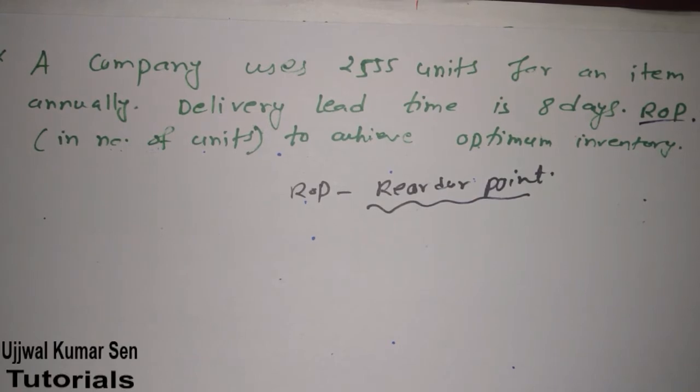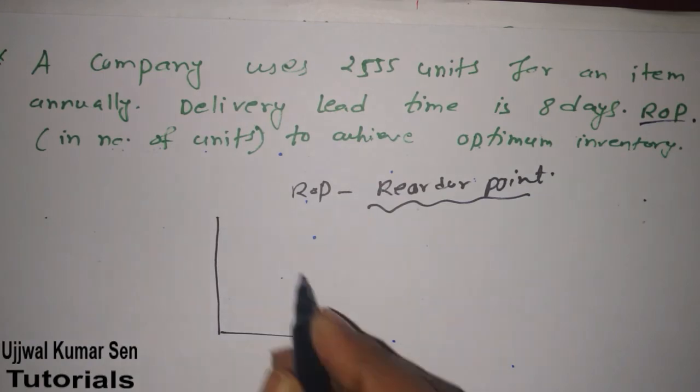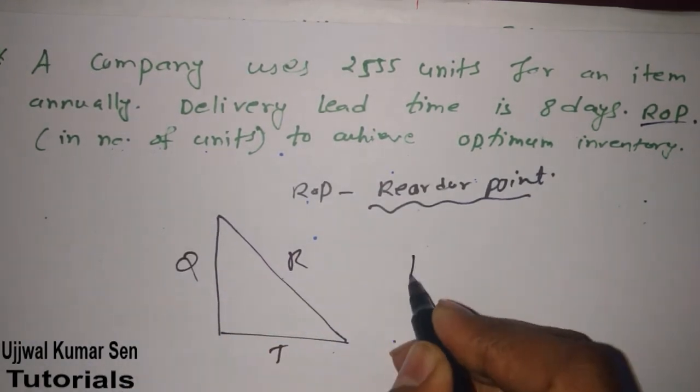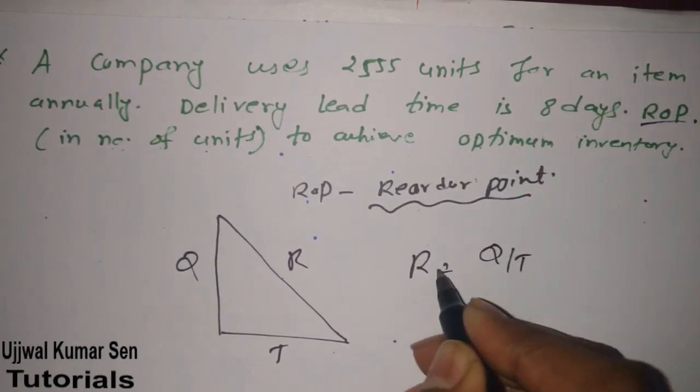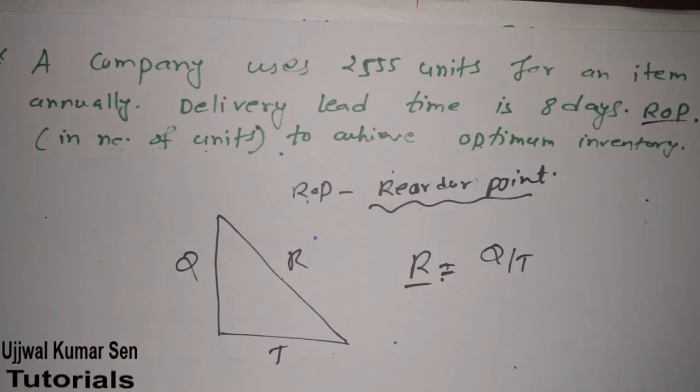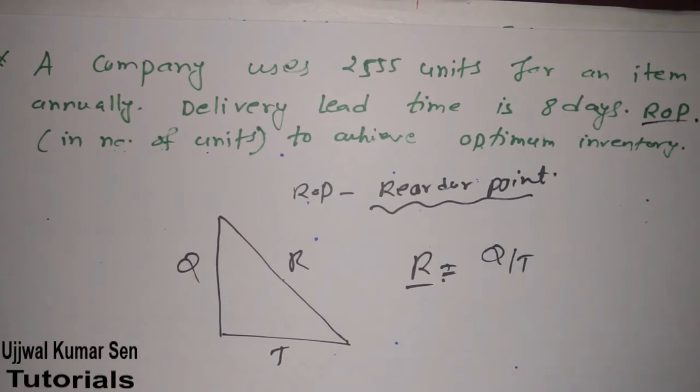Let's go. We know that this is Q, this is T, this is R. R equals Q/T. R is the consumption rate or demand. Q is order quantity, and T is the time period, also known as lead time.